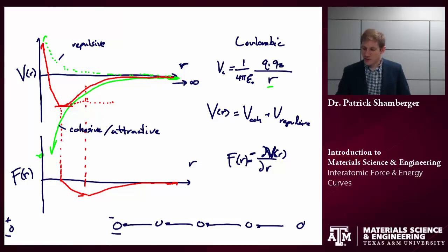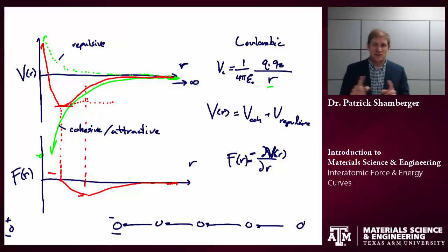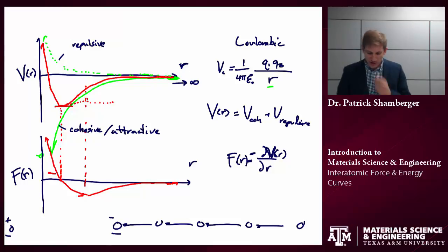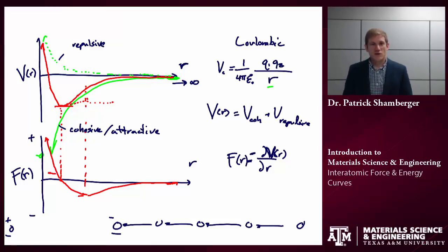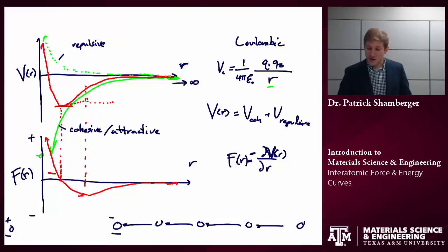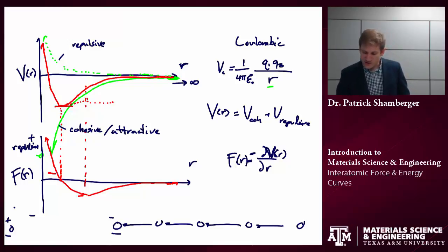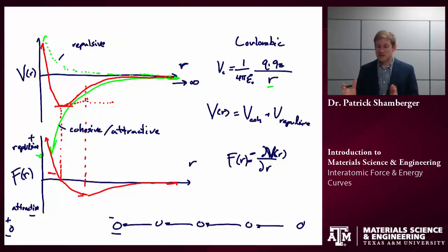At the minimum in the potential energy curve, force equals zero. At closer distances — smaller interatomic distances — the force is going to get very large and positive. I encourage you to think about it intuitively: as the two atoms get very close together, they see a positive, repulsive force pushing them apart. Versus if we start pulling them apart, they see a negative, attractive force acting to decrease the interatomic distance and pulling them back together.